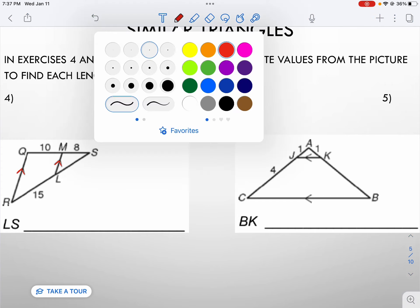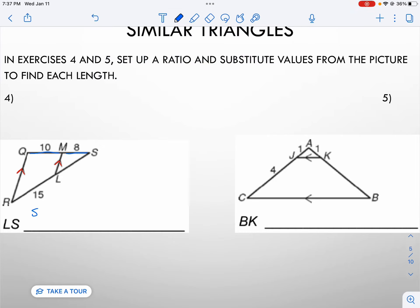We know these two sides are parallel. Therefore, create your ratio. SM over QM should be proportional to SL and RL. Substitute in your values: 8 over 10 equals X over 15. Cross multiply: 10X equals 8 times 15, which is 120. Divide by 10 such that X equals 12. So length SL would be 12.